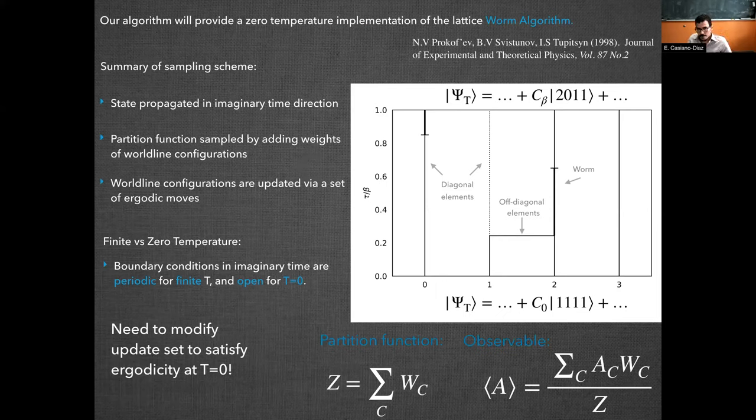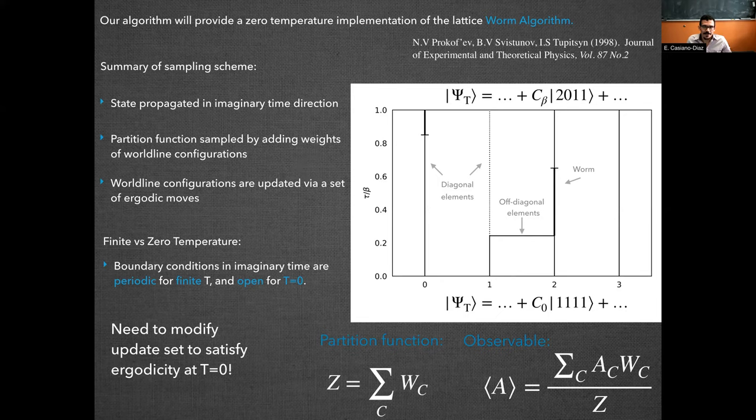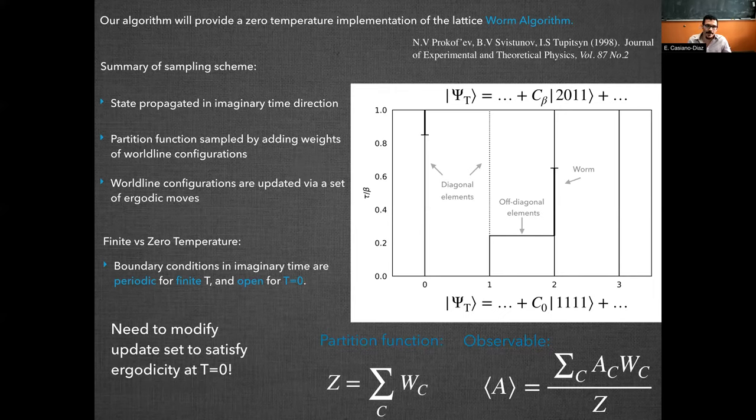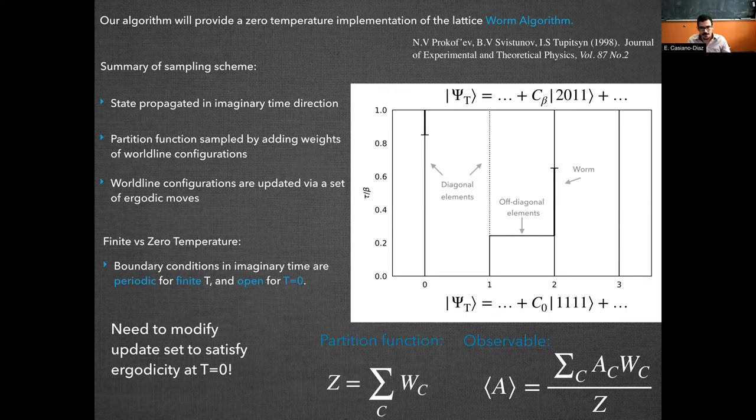Our algorithm will be a zero temperature version of the lattice worm algorithm developed by Prokofiev. So the basic idea is we take a state, we propagate this state in the imaginary time direction, and we end up with paths, or a set of paths like the ones in the figure, that will be known as world lines. Each of these world line configurations will have some weight that will contribute to the partition function. Once we sample the partition function, we can then estimate the observables that we want.